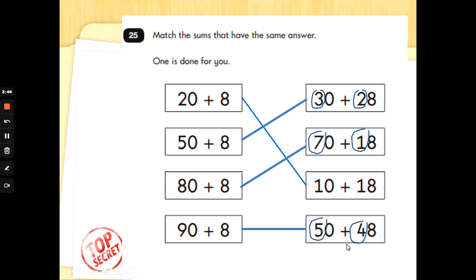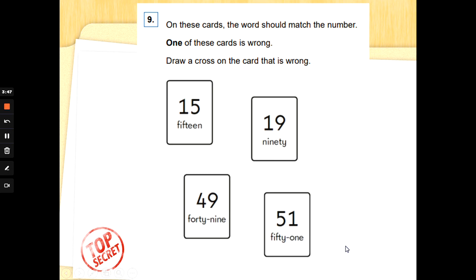Number nine: on these cards the word should match the number. One of these cards is wrong. Draw a cross on the card that is wrong. So we've got 15 on that card in words and numbers, 49 on that card, 90. Oh, just let's check the other one and we'll go back and see if we've spotted the one that's wrong. And the last one says 51. So let's read them from the top: 15, 49, 90.